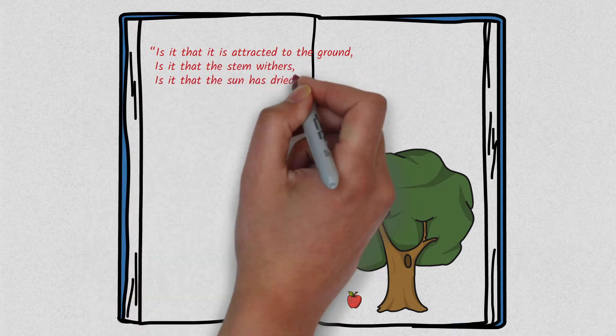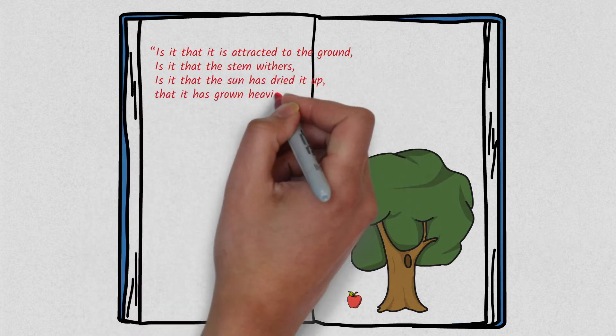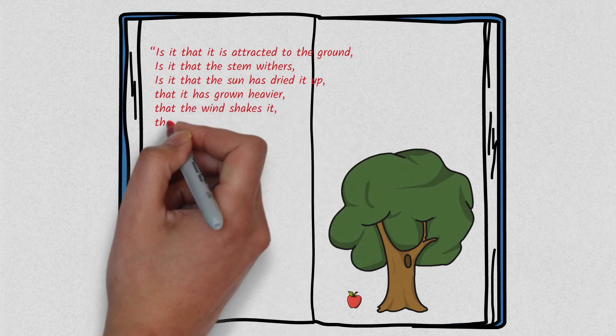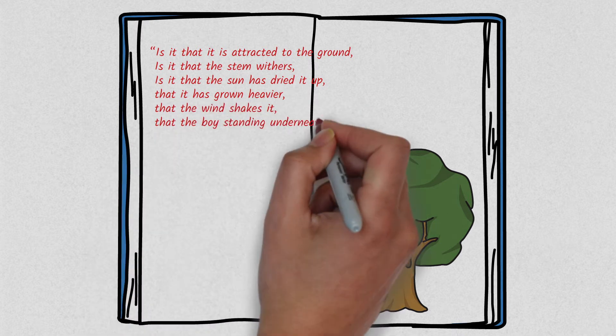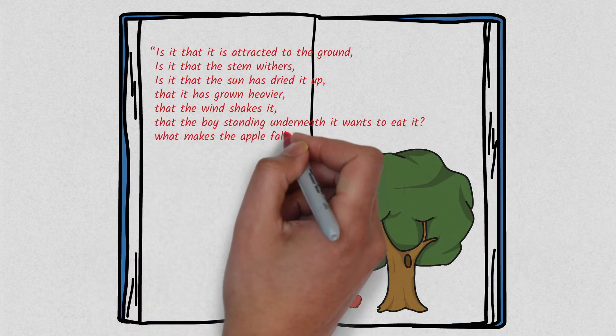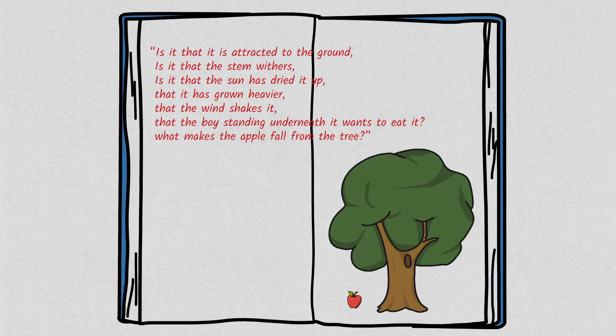Is it that the sun has dried it up? That it has grown heavier? That the wind shakes it? That the boy standing underneath it wants to eat it? What makes the apple fall from the tree?